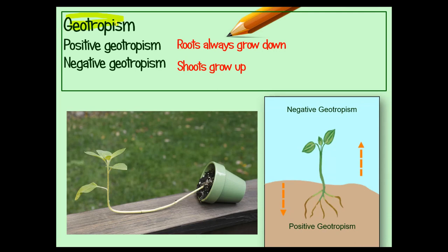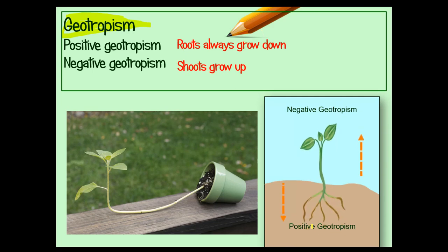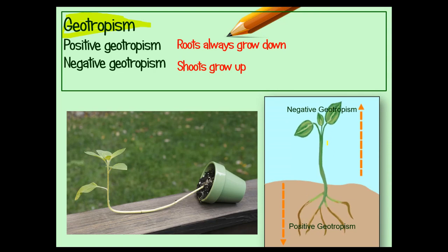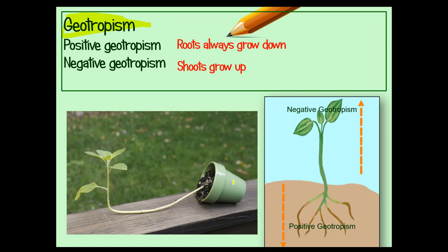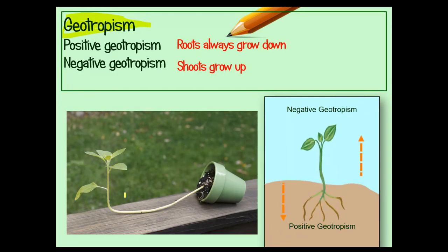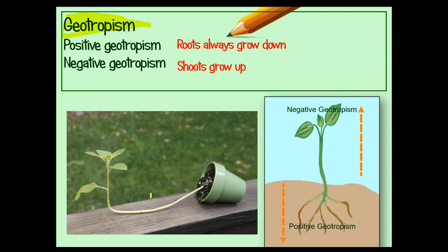Geotropism is a plant's response to gravity. Basically, roots always go down and shoots always go up — the shoots are the stems and leaves. It doesn't matter how you plant your seed; you don't need to make sure it's right side up, because the roots know to go down and the shoots know to go up. Even if you lay a pot on its side, the plant will turn and grow upwards.